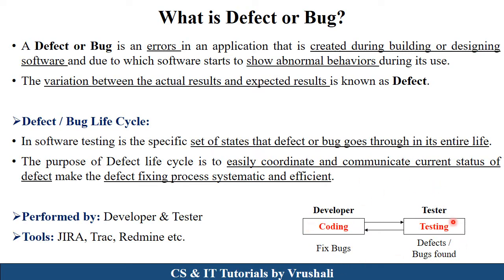As shown in this diagram, in the software development lifecycle, after coding there is a testing phase. The tester identifies all the defects in a particular project and resends them to the developer for fixing. That is why the defect lifecycle is performed by both the developer and the tester. For that purpose, they use different tools like Jira, Track, Redmine, etc.